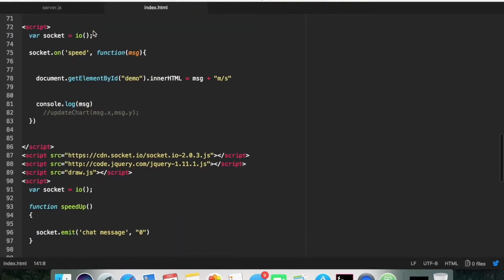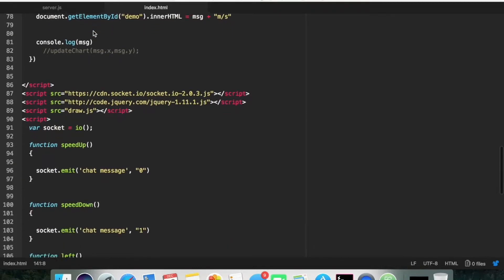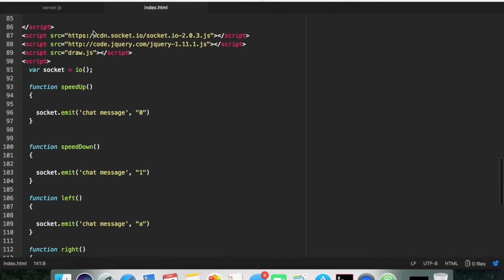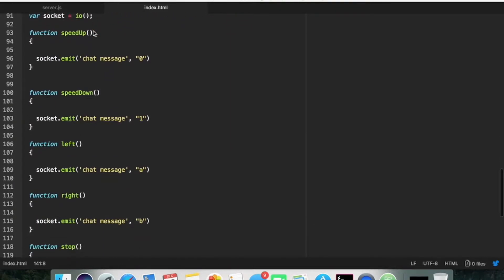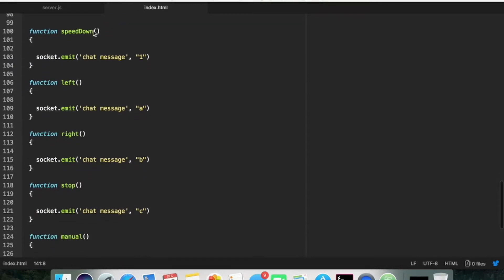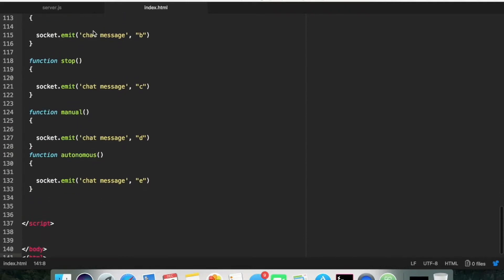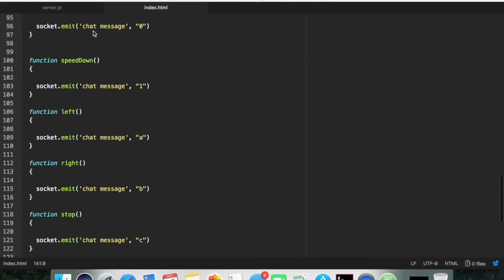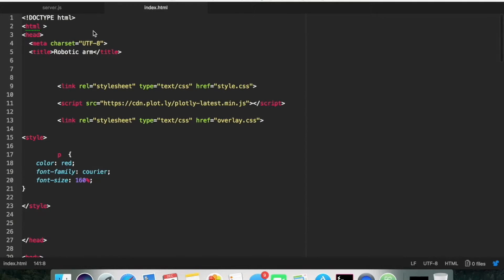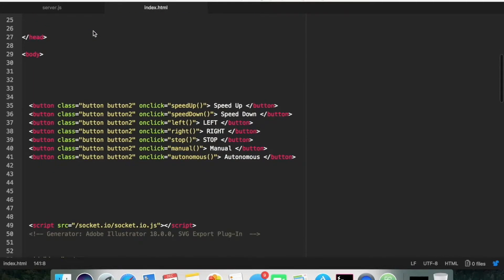And then you have this script. This script is pretty much all the functions. And then what it does is that as soon as you press one of those buttons, you action one of those functions, and it emits a message through socket.io to the backend. So this is how it works. You press the button, one of the functions gets executed, and you send data to the backend through socket.io.